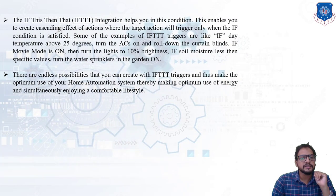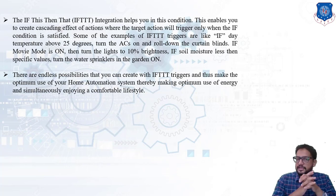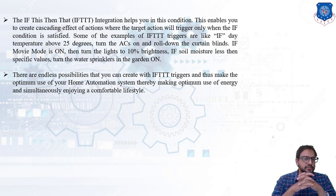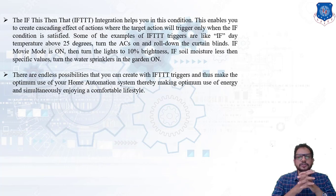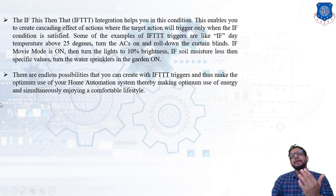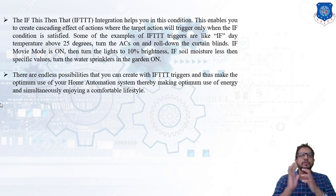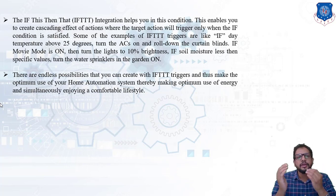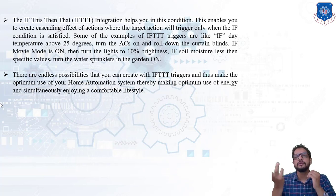The IFTTT integration enables the creation of a cascading effect of actions where the target action triggers only when the IF condition is satisfied. For example: if the day temperature is above 25 degrees Celsius, then switch on the air conditioner and roll down the curtain blinds, since a cooling effect is required. Another example: if movie mode is on, then turn the lights to 10% brightness, because when a home theater system is running we don't require bright light in the room.